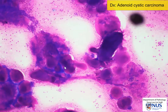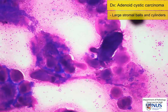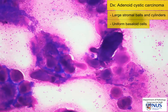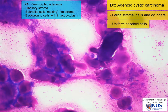So a quick recap: we have here an example of adenoid cystic carcinoma with a very classical appearance of these large, variably sized stromal balls and cylinders, and quite uniform ovoid nuclei which are either placed in between these stromal balls or in the background, often as naked nuclei. This is in contrast to pleomorphic adenoma, because the stromal component in pleomorphic adenoma is usually more fibrillary instead of forming these large stromal balls. Also, the epithelial cell component in pleomorphic adenoma tends to blend into the stroma, as opposed to here where the cells are quite separate from the stroma. And a third feature is that you often see these bare nuclei in adenoid cystic carcinoma in the background, whereas in pleomorphic adenoma the cells in the background usually have intact cytoplasm, and some have a plasmacytoid appearance.